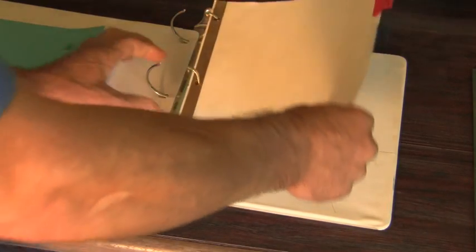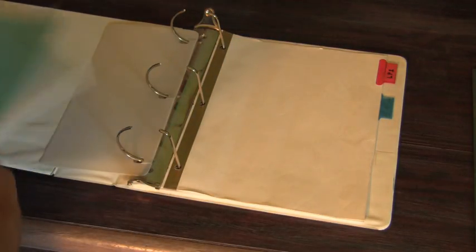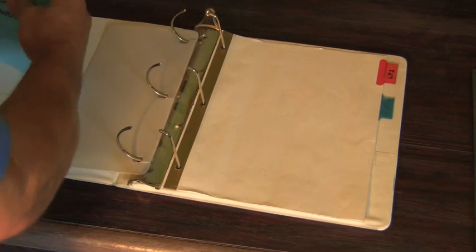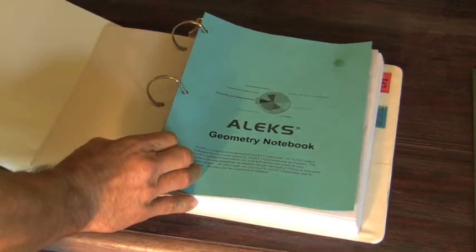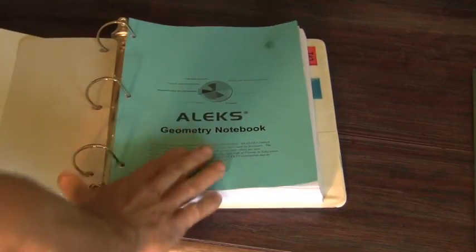You might also need some additional lined paper. You can always add that later. Put the tabs in the back, and then place your notebook on the rings, and you're ready to go.